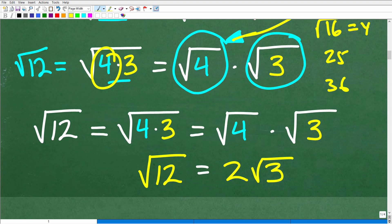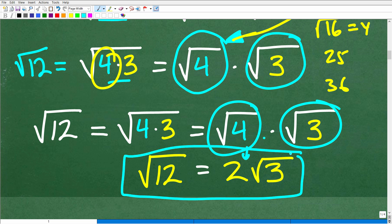So the square root of 12 is equal to the square root of 4 times 3, which, of course, is equal to the square root of 4 times the square root of 3, and the square root of 4, which, of course, is 2. So that would be 2 times the square root of 3. So the square root of 12 is equal to 2 times the square root of 3.